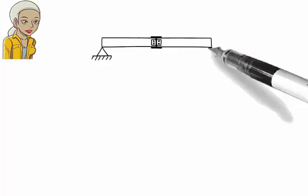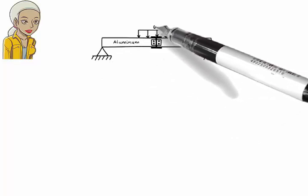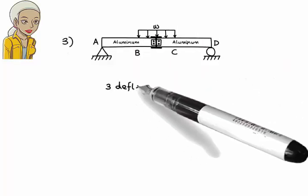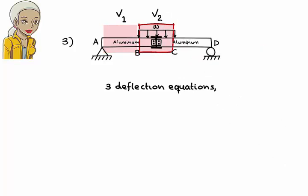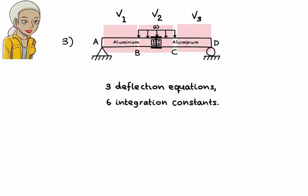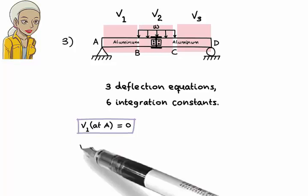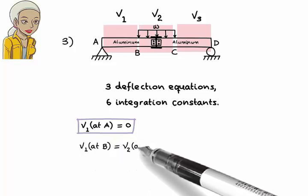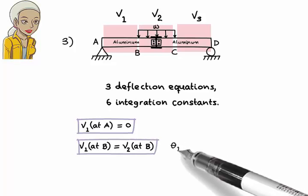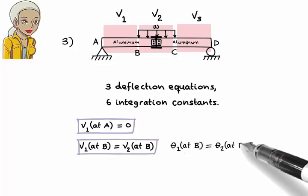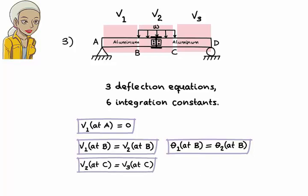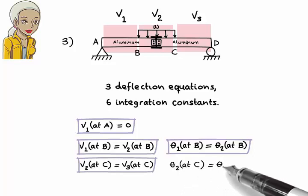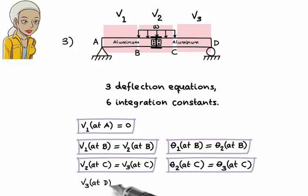Solution for Problem 3. We need 3 deflection equations for this beam because the distributed load divides the beam into 3 segments. Since each equation has 2 integration constants, we need a total of 6 boundary equations. Deflection at the pin support must be 0. Deflection and slope at B must be continuous. Deflection and slope at C must be continuous. Deflection at the roller support must be 0.